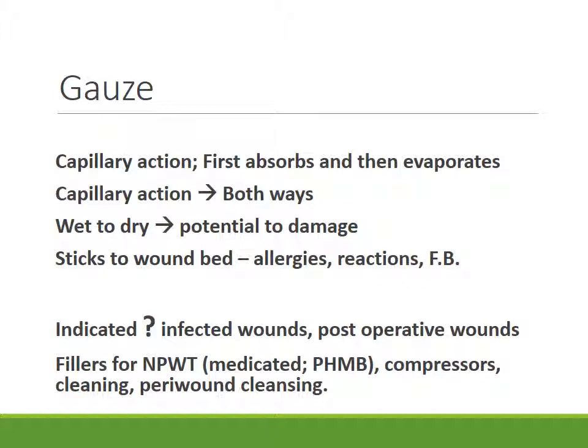Gauze is basically cotton fiber which has been twisted into threads and placed in a criss-cross fashion. If you have gauze number 5, it means 25 squares per inch; gauze number 6 means 36 squares per inch; and gauze number 8 means 64 squares per inch. Gauze acts by capillary action — in between the fibers of cotton there is a capillary space, and when this is in contact with any fluid, the fluid slowly gets pulled into the gauze.